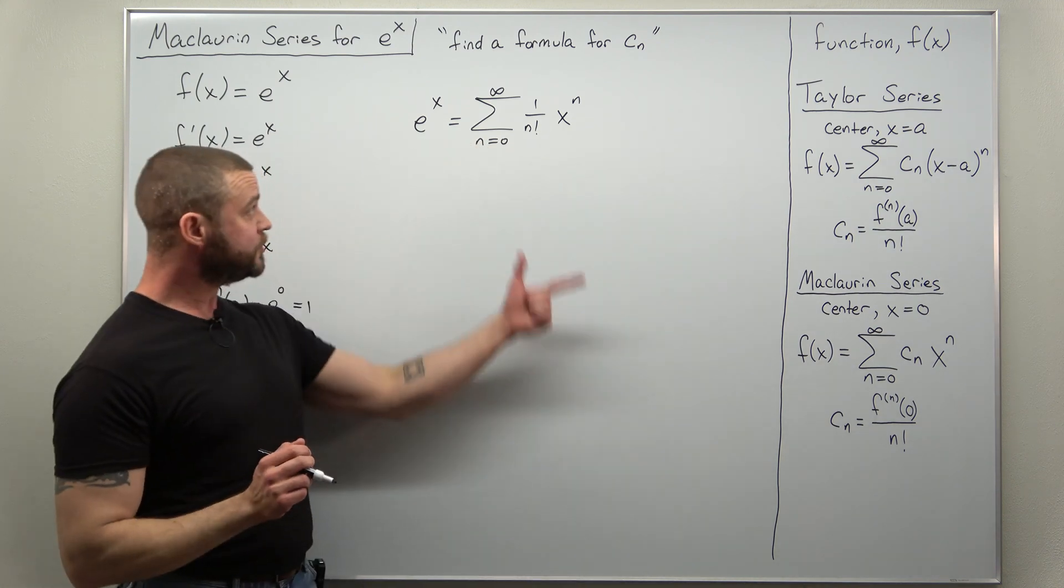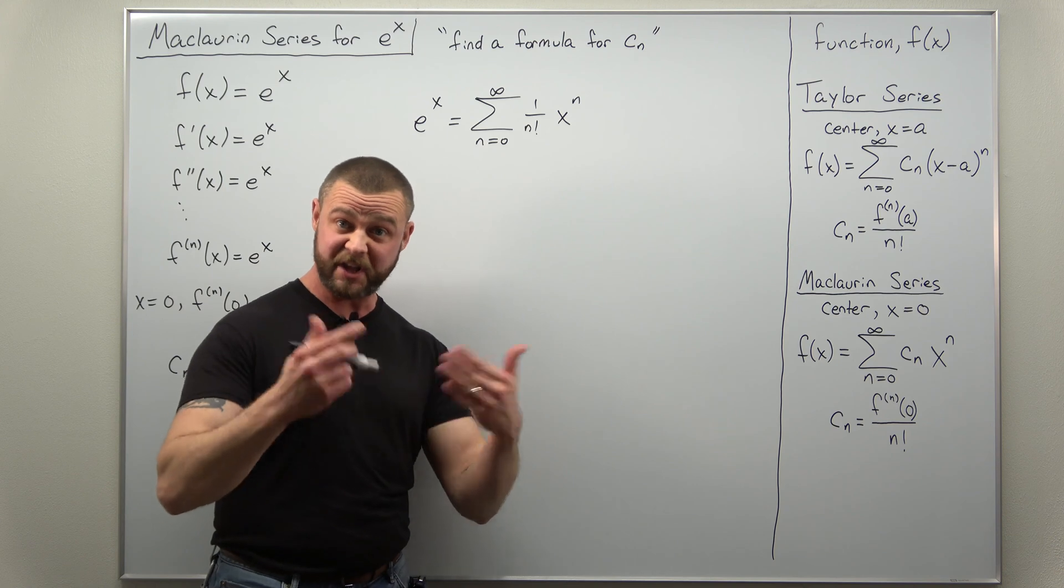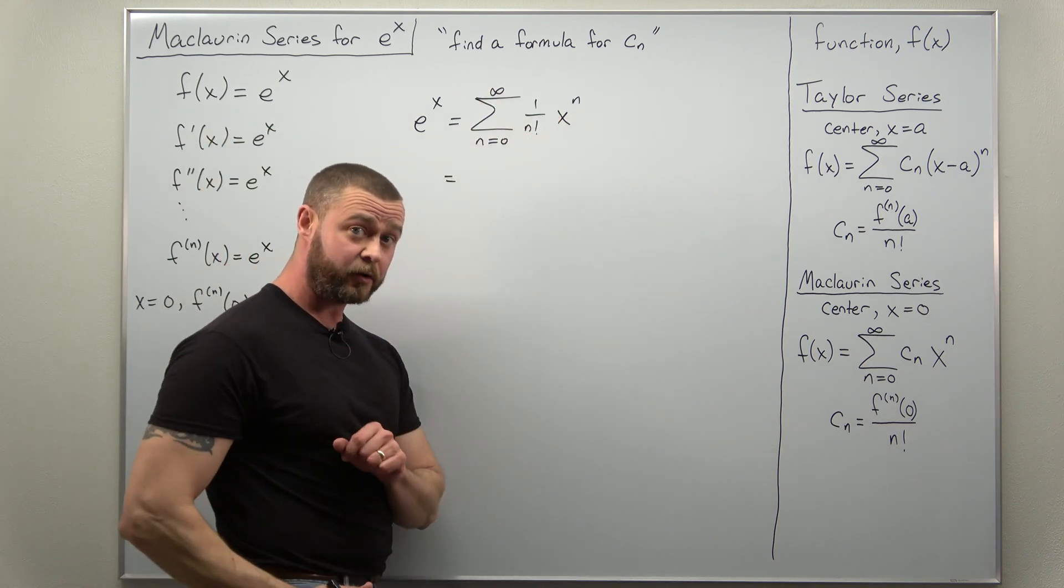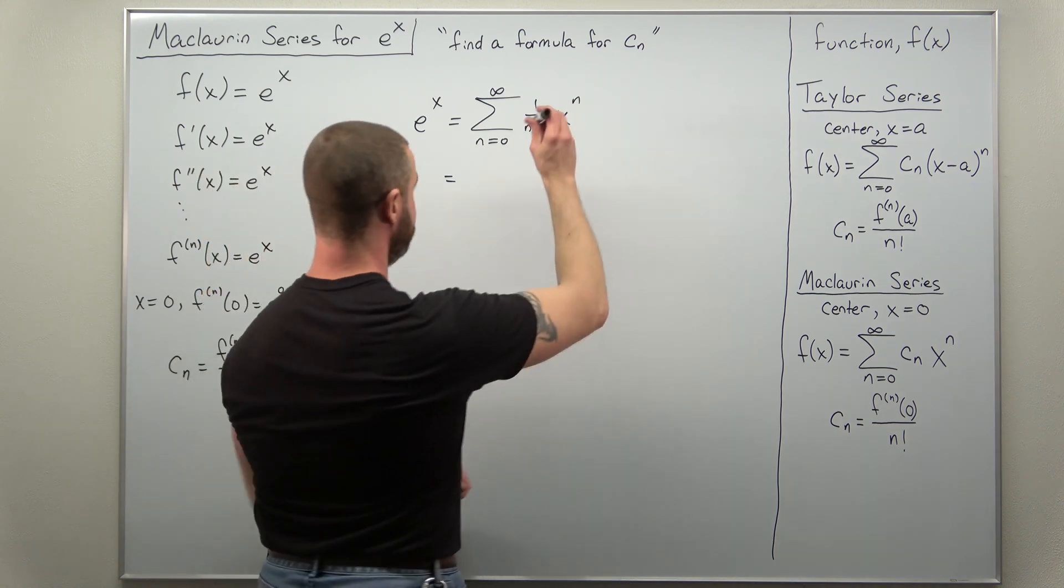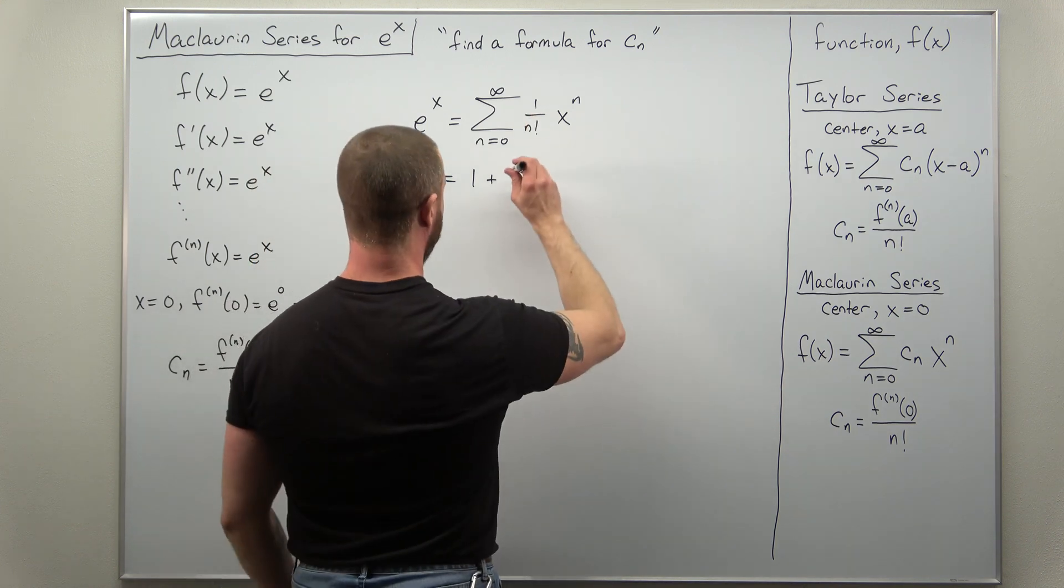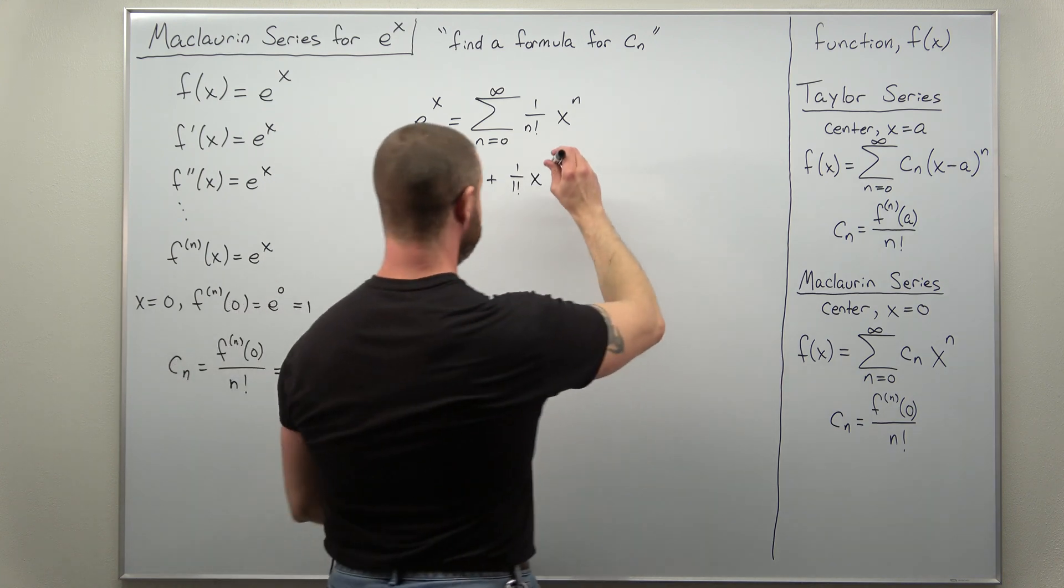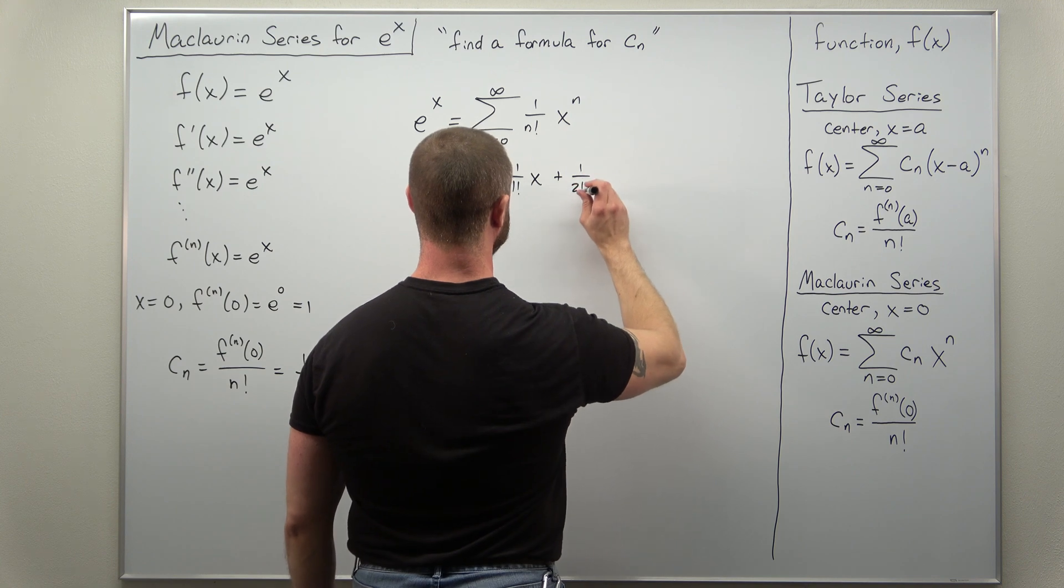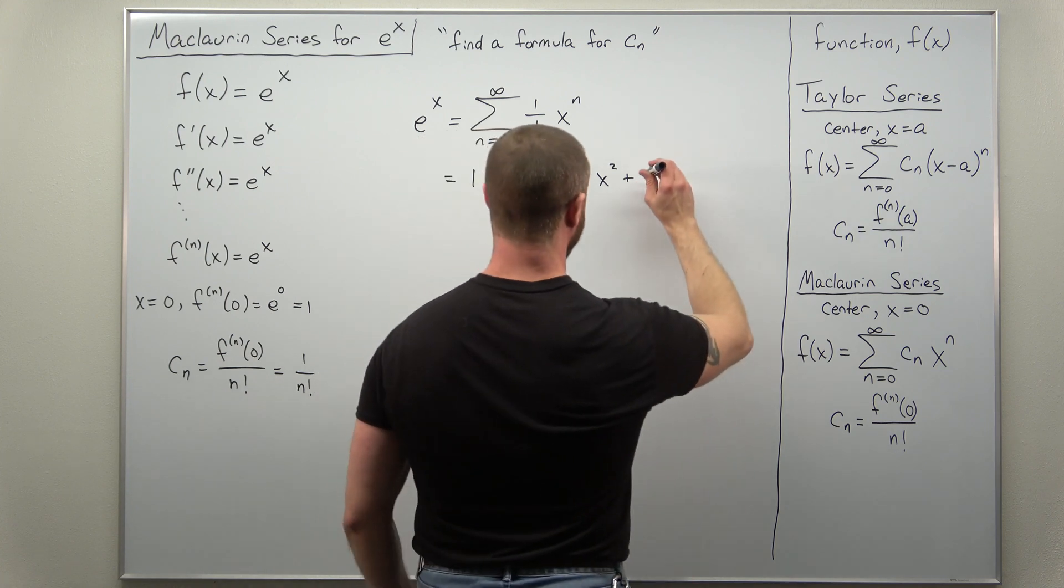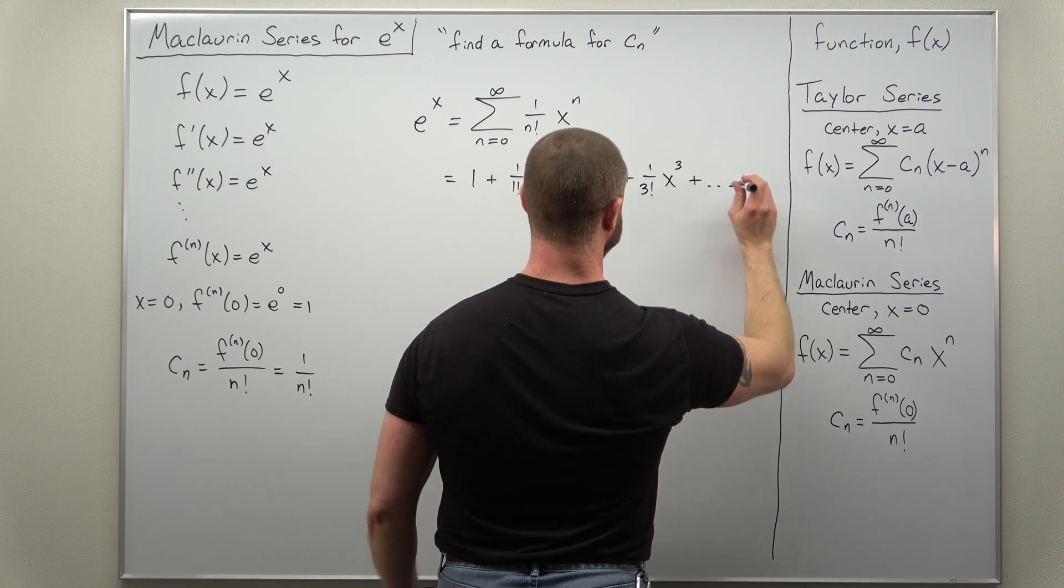Now I always think it's a good idea once you have your formula here in summation notation, just write out a few terms so you can see what it actually is. So if we start with n equals zero, recall that zero factorial is one, x to the zero is also one, so your first term will be one. Now we go to n equals one, we get one over one factorial times x to the first power. Now we go to n equals two, one over two factorial times x squared, and we'll go one more term to n equals three, one divided by three factorial times x cubed.